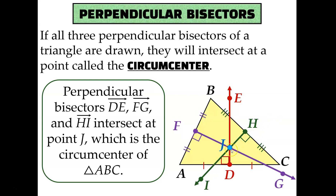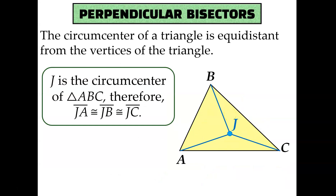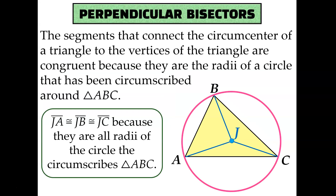The three perpendicular bisectors intersecting at one point is special on its own, but we can expand on that and notice that the distance from the circumcenter to each of the vertices of the triangle are congruent to each other. That's not by coincidence — it's because if you were to inscribe that triangle in a circle, placing triangle ABC inside a circle, J would be the center of the circle, and AJ, BJ, and CJ are all radii. Since all radii in a circle are the same length, the circumcenter of a triangle is equidistant from the vertices.